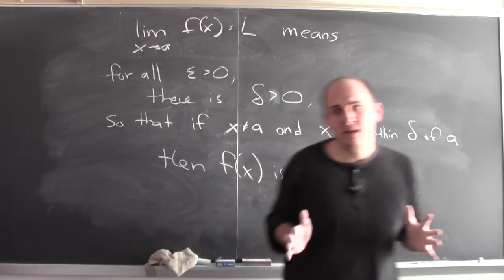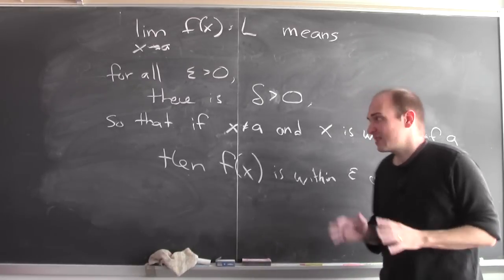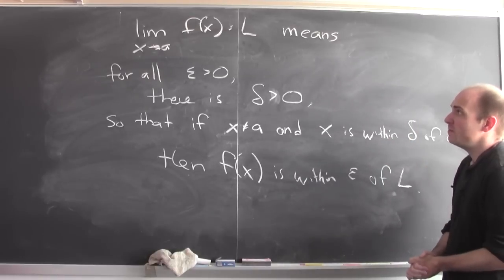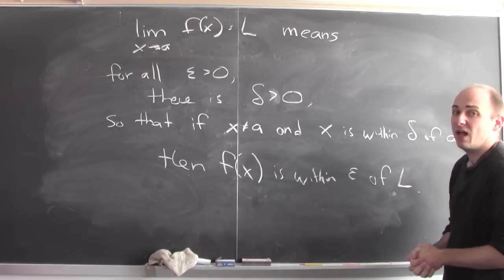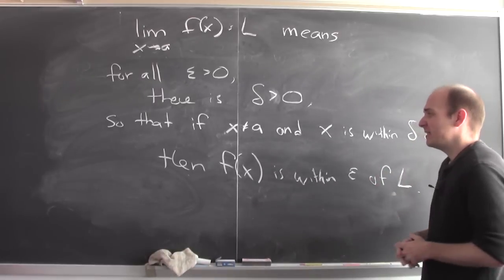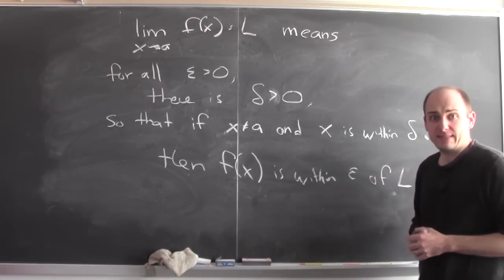Now how this actually gets played out in more concrete situations can be kind of complicated. But this is really the official definition of what it means to say that the limit of f of x equals L as x goes to a. And we're going to be trying to unpack this definition to see what it might mean in some specific cases.